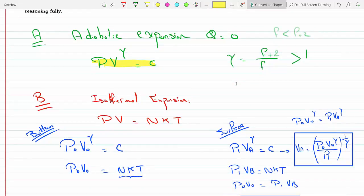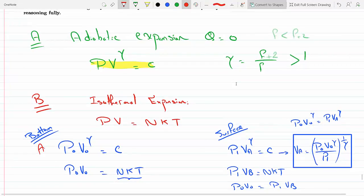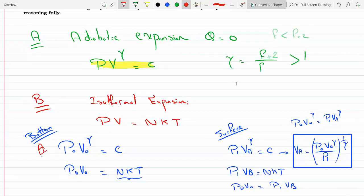At the bottom they both obey each one's own relation. So P zero V zero to the gamma equals some constant C, that's for molecule A, and this here the second one is molecule B. I called P zero V zero the pressure and the volume at the bottom of the lake.